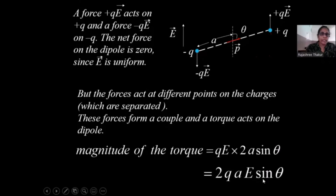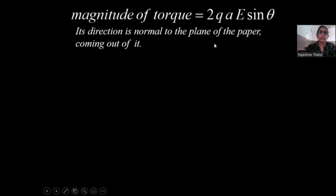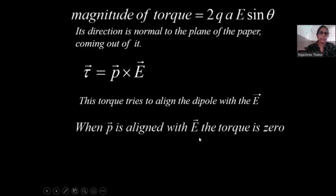Rearranging, the torque magnitude is 2qAE sin theta, and since 2qa is the dipole moment P, we get magnitude equal to PE sin theta. As a vector, torque equals P cross E, directed normal to the plane of the paper. This torque tries to align the dipole with the electric field. When P is aligned with E, the torque acting on the dipole is zero.